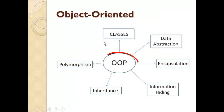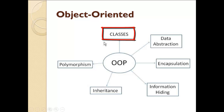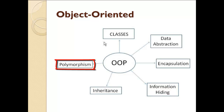Java is an object oriented programming language and it supports all the features of object oriented programming like classes, data abstraction, encapsulation, information hiding, inheritance, polymorphism, and many more. Object oriented programming language is the most popular and successful programming approach to develop any real world application.